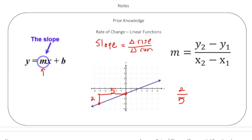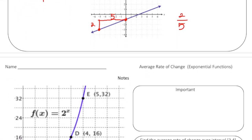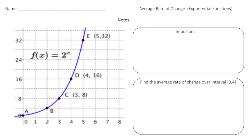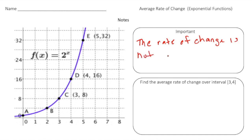Now an exponential function is quite different than a linear function because our graph is no longer just a nice line. So the rate of change is going to be changing throughout the graph. That's important to write down: the rate of change is not constant throughout the graph.